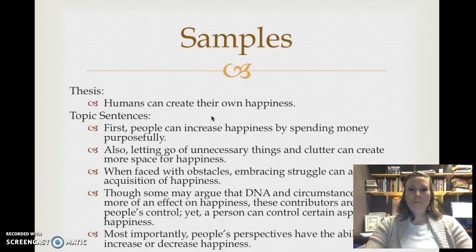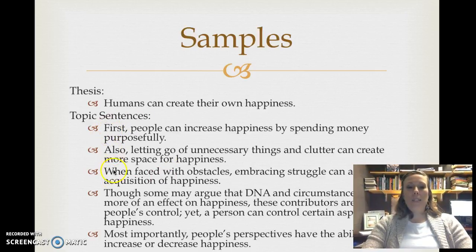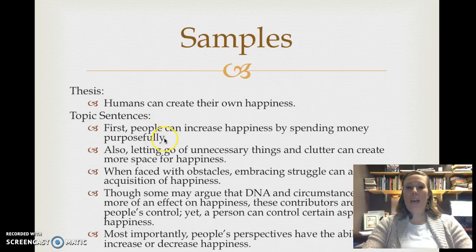Here are some samples. My thesis statement is in response to the chapter that asks, can people create their own happiness? My thesis answers that humans can create their own happiness — so I argue that point. Here are also some example topic sentences going through my paper. I would have five body paragraphs, seven paragraphs total. First: people can increase happiness by spending money purposefully. Here I give one way that people can create their own happiness to argue and illustrate my point.